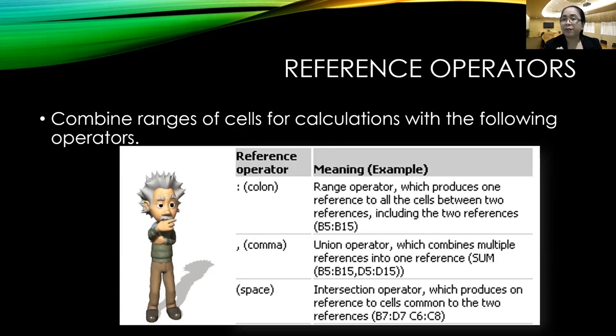Example given, reference 1 is B7 until D7. Now reference 2 is C6 until C8. Now these two references will intersect at column C, row 7. Now whatever value is in C7 will be the expected result. Now to show you a sample of how the intersection operator works, let's look at this sample.